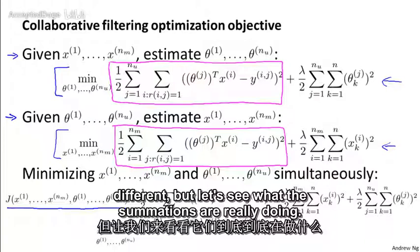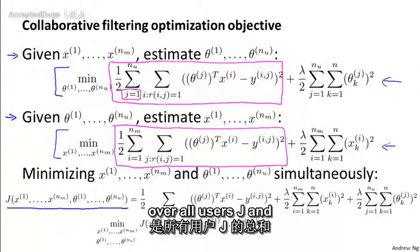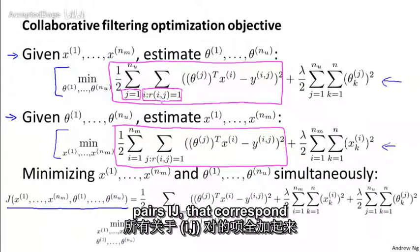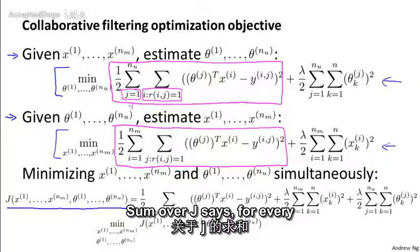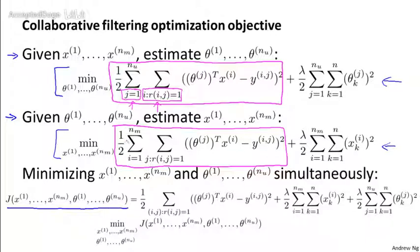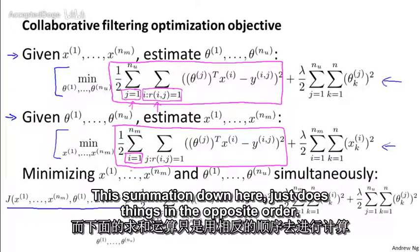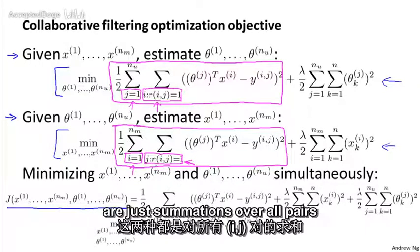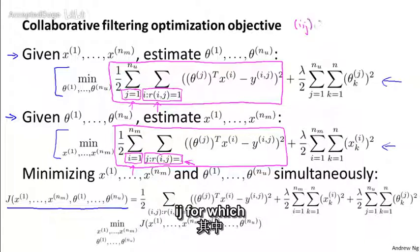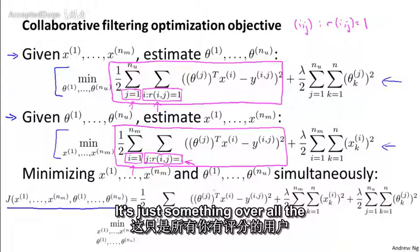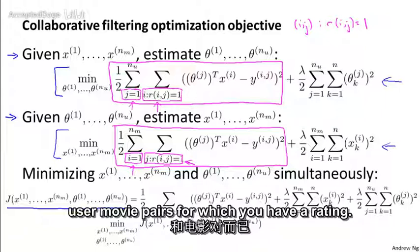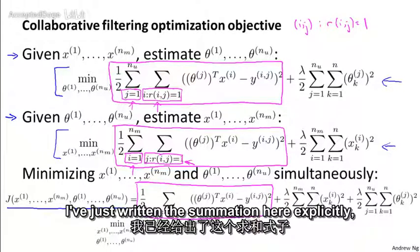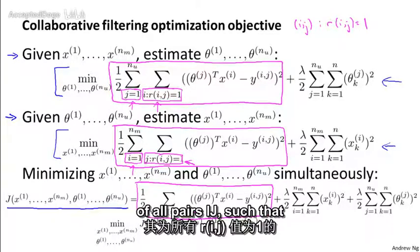The summations look a little bit different, but let's see what they're really doing. The first summation is sum over all users j, and then sum over all movies rated by that user — so this is really summing over all pairs i, j that correspond to a movie rated by a user. This summation just does things in the opposite order: for every movie i, sum over all users j that have rated that movie. Both summations are just summing over all pairs i, j for which r(i,j) equals 1.